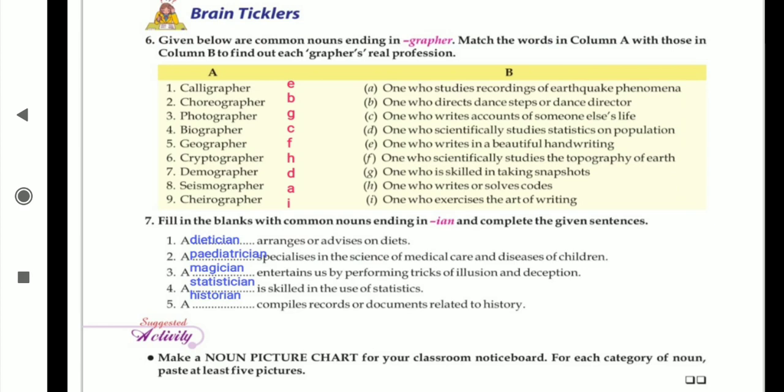And the fifth one is a diet compiles records of documents related to history. That is the historian. This all you are going to complete in your textbook.